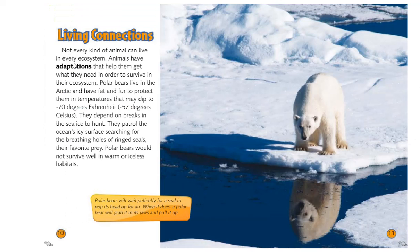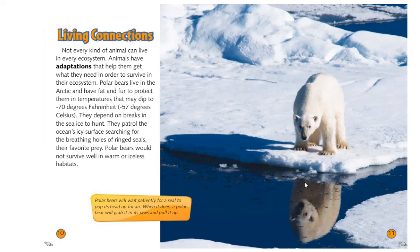Living connections. Not every kind of animal can live in every ecosystem. Animals have adaptations — things that help them survive in a certain place — that help them get what they need in order to survive in their ecosystem. Polar bears live in the Arctic and have fat and fur to protect them in temperatures that may dip to negative 70 degrees Fahrenheit, or minus 57 degrees Celsius. They depend on breaks in the sea ice to hunt, patrolling the ocean's icy surface searching for the breathing holes of ringed seals, their favorite prey. Polar bears would not survive well in warm or iceless habitats — their adaptations help them survive in the Arctic, not anywhere else. Polar bears will wait patiently for a seal to pop its head up for air, then grab it with their jaws and pull it up to eat.